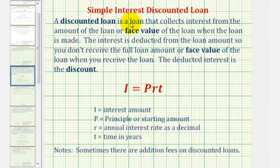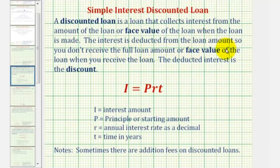Welcome to a lesson on simple interest discounted loans. A discounted loan is a loan that collects interest from the face value of the loan when the loan is made. The interest is deducted from the loan amount, so you don't actually receive the full face value when you receive the loan. The deducted interest is the discount.